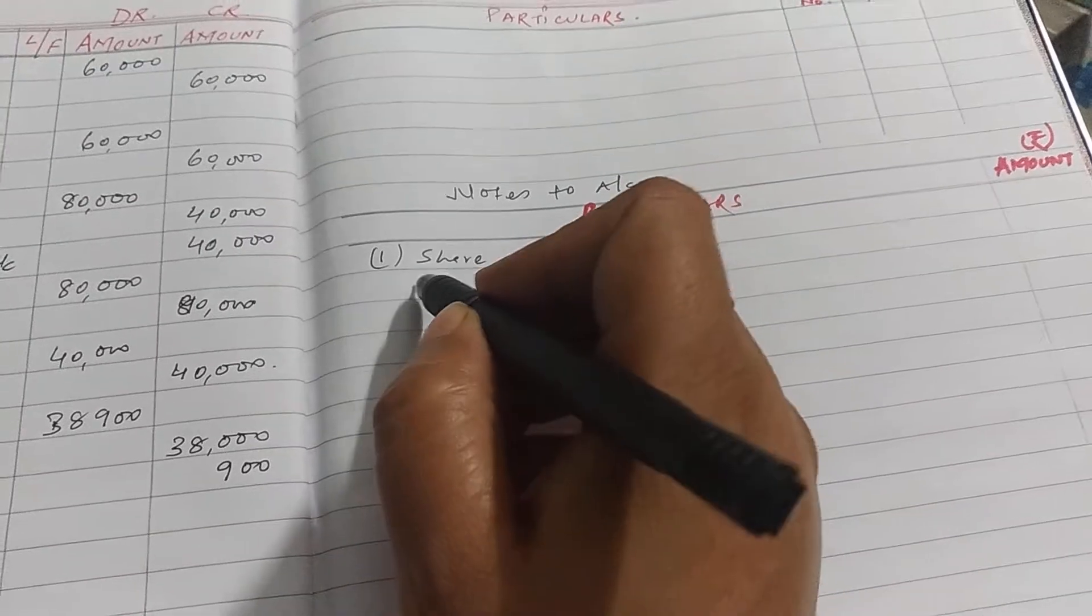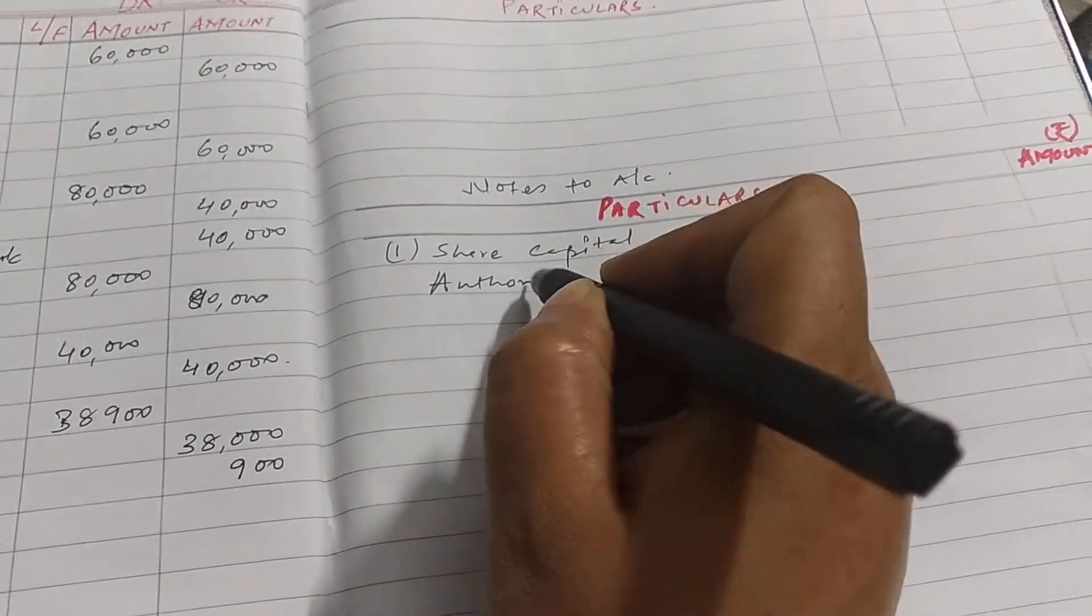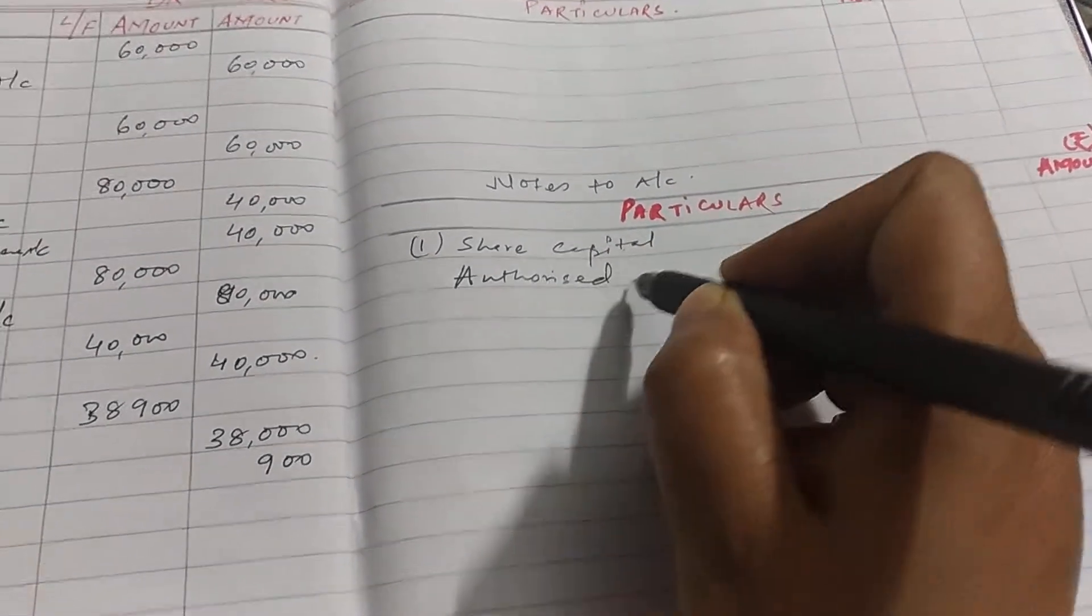Under share capital, the major head is authorized capital.